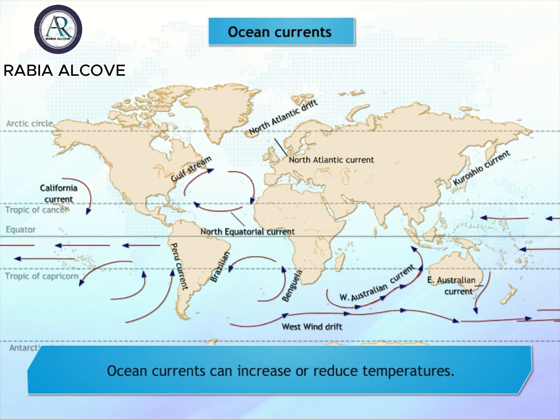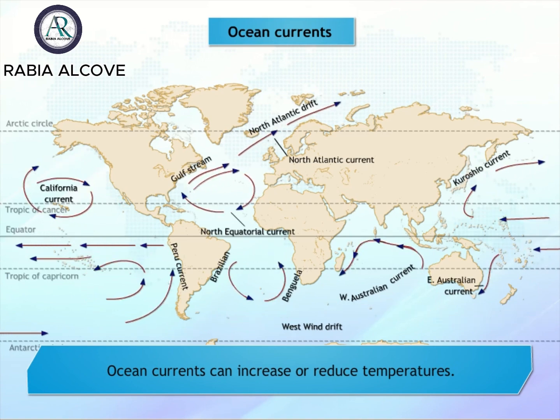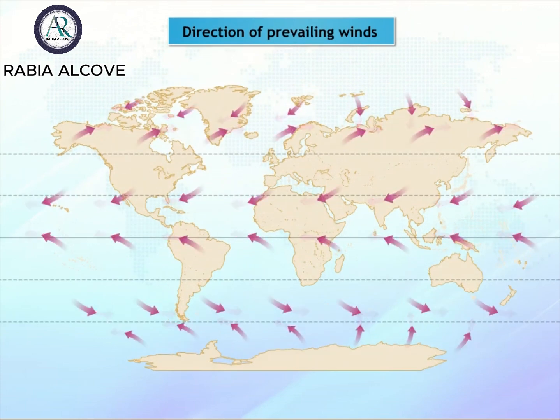Winds that blow from the sea often bring rain to the coast, while the inland areas remain dry. So the direction of prevailing winds also affects climate.